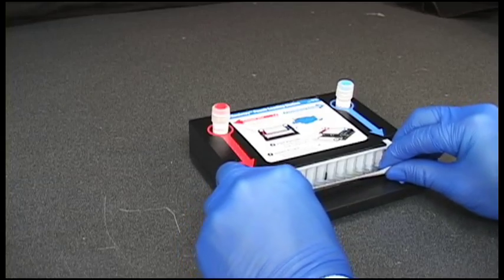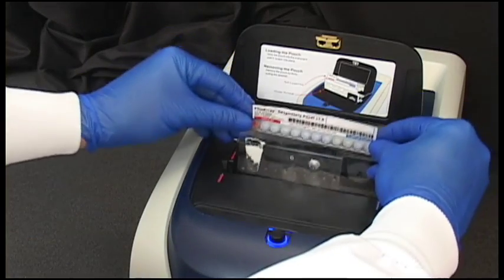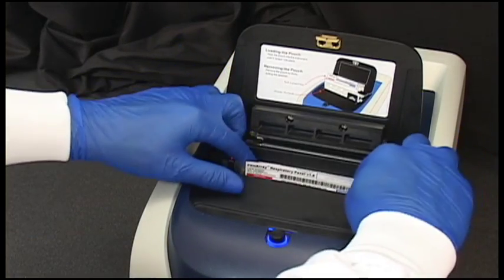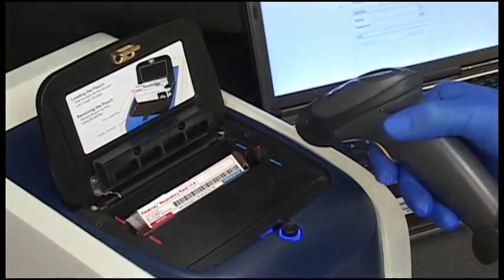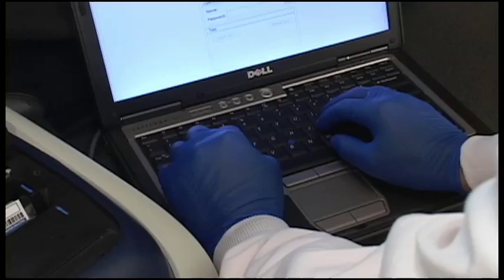The FilmArray instrument is now ready to set up. The FilmArray pouch is loaded into the FilmArray instrument and a barcode reader is used to enter the pouch ID. The sample ID can also be scanned with the barcode reader or entered manually.